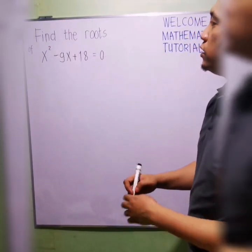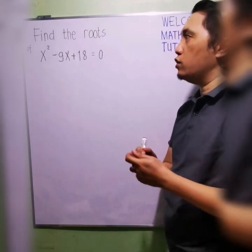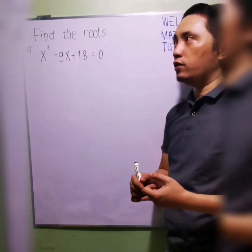We have here, find the roots of x squared minus 9x plus 18 equals 0. There are lots of ways in solving quadratic equations. One would be factoring by factoring.